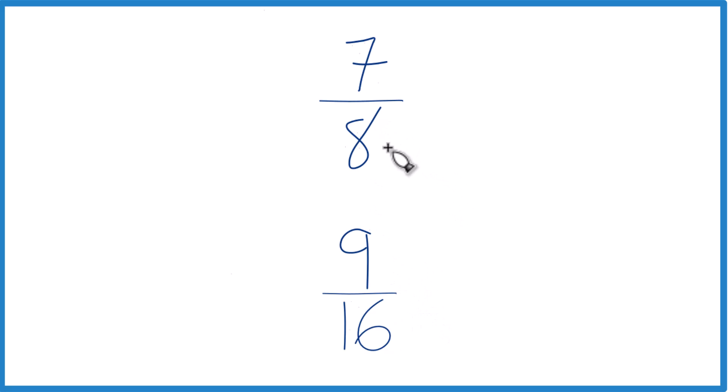You could also find a common denominator. Right now we have 8 and 16, but if we've got a common denominator, something both 8 and 16 go into evenly, then we could compare the numerators. So let's try that.